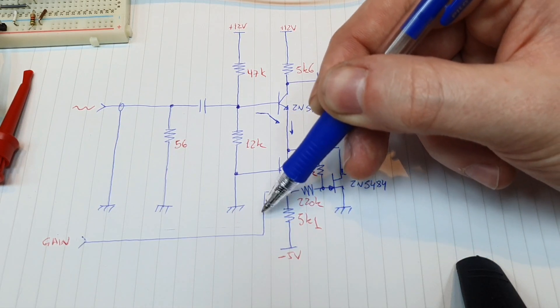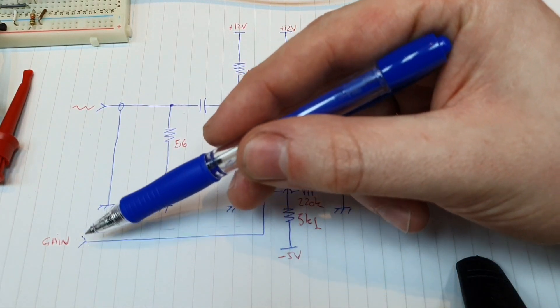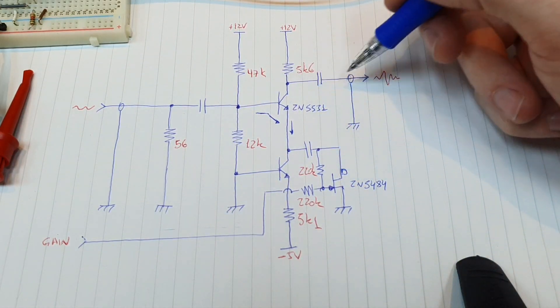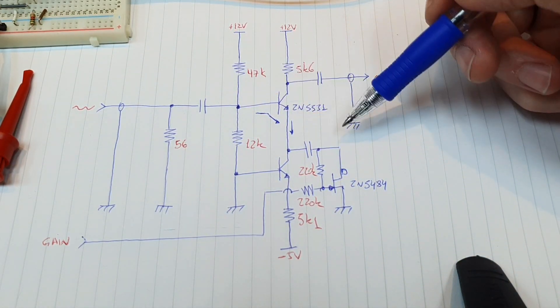So changing this bias in here the gain control voltage will change the gain the output gain of the common emitter amplifier.